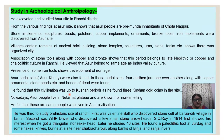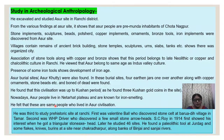He found that this civilization continued up to the Kushan period. Nowadays, Asur people living in Netarhat and Pato are known for iron smelting. He found that these people are the descendants of the same Asur civilization people who were iron smelters.